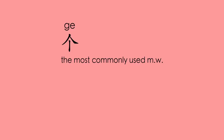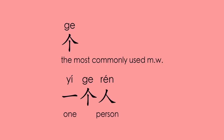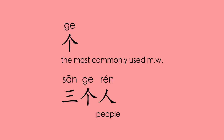个 — the most commonly used measure word. It can be used for most nouns. 一个人 (one person), 两个人 (two people). When two is used before a measure word, it is pronounced as 两 instead of 二. 三个人 (three people).